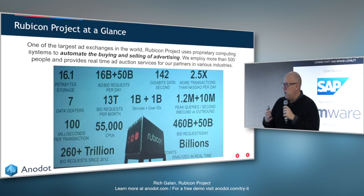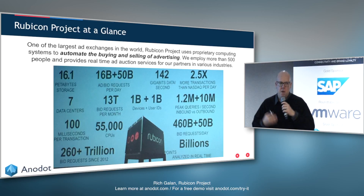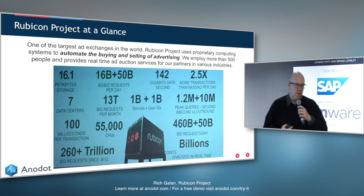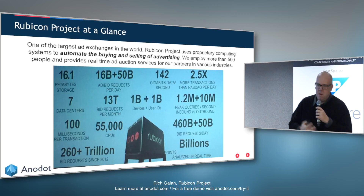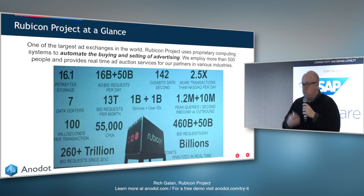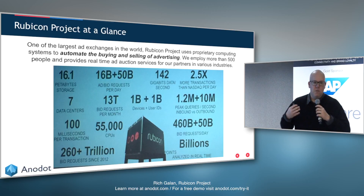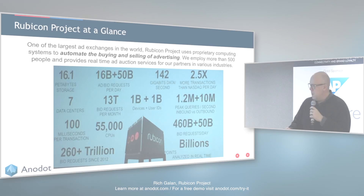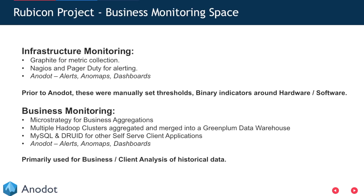What we need is real-time anomaly detection. We don't have thousands of people looking at this data all the time — we need something to tell us when there are issues. For infrastructure monitoring we use Graphite, Nagios, and now we use Anodot.